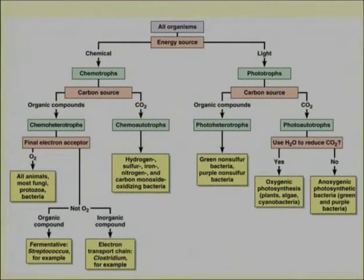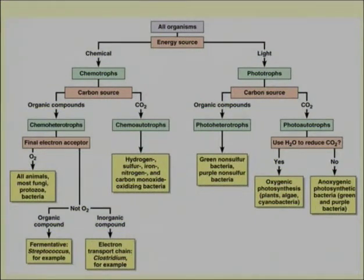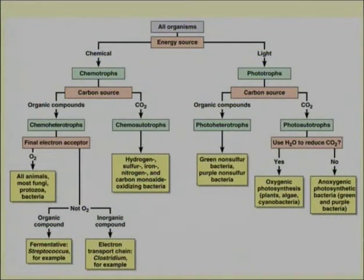All microorganisms are divided into chemotrophs and phototrophs. In the subgrouping of chemotrophic organisms, based on the type of carbon source required — carbon dioxide or more complex organic sources — they are known as chemo-autotrophs or chemo-heterotrophs. Those requiring organic carbon other than carbon dioxide are known as chemo-heterotrophs, and those which can fulfill all carbon requirements from carbon dioxide are known as chemo-autotrophs.